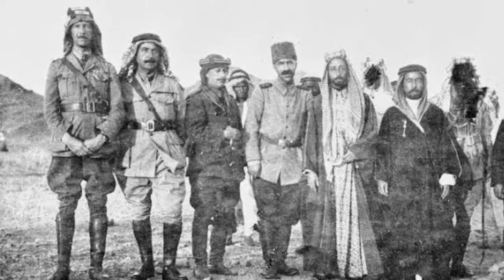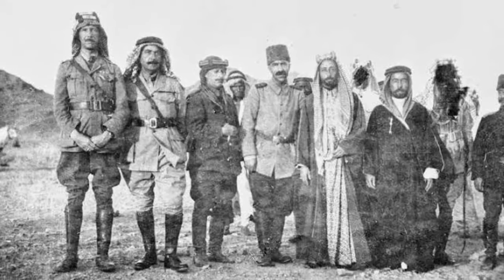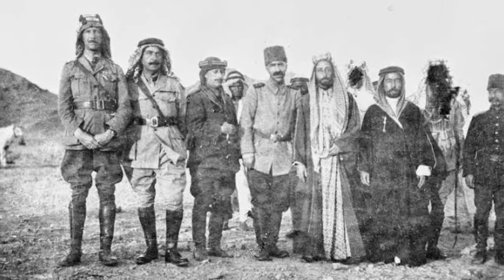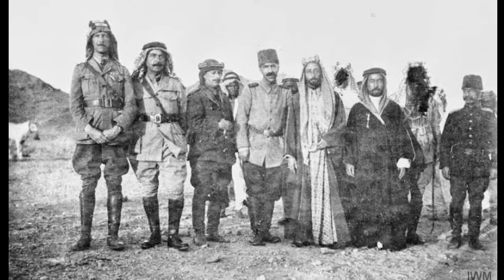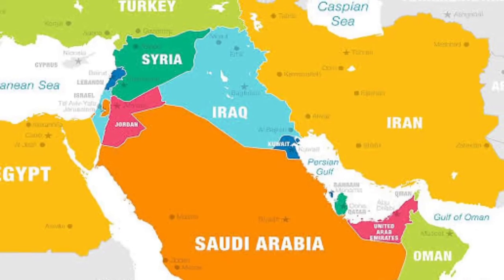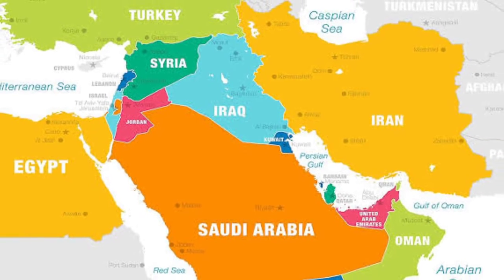The empire's possessions on the western shores of the Persian Gulf were variously annexed by Saudi Arabia — Al-Asr and Qatif — or remained British protectorates such as Kuwait, Bahrain, and Qatar, and became the Arab states of the Persian Gulf.